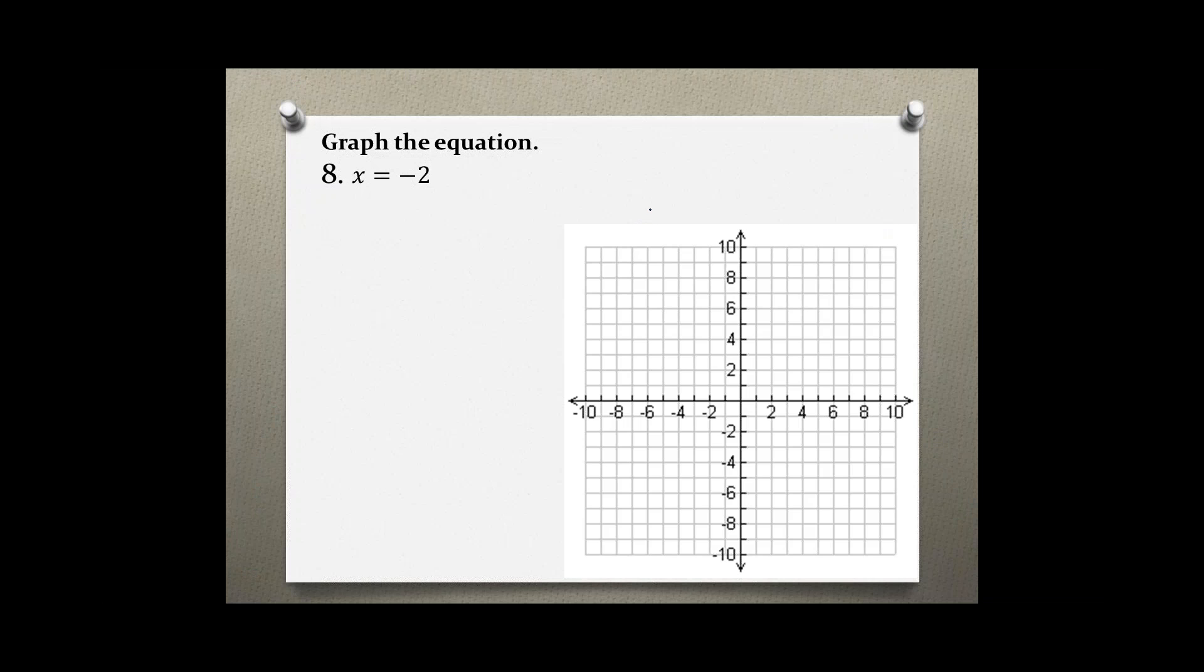So if you don't know what to do, best thing is probably to make yourself a table and just pick some random numbers. This would be your x value and pick some y values. x always has to be negative 2.